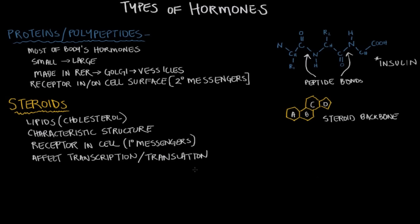Some examples of major steroids in the body are those that come from the adrenal cortex, like cortisol and aldosterone, and those hormones that come from the gonads — the sex hormones — like testosterone, estrogen, and progesterone. So we've got steroids, and we've got proteins and polypeptides.